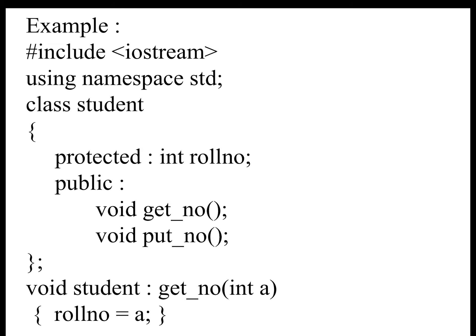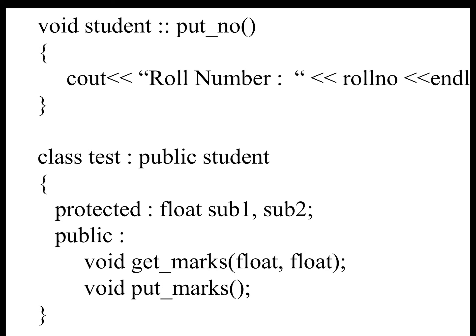Let us look at an example of Hybrid Inheritance. Class Student has a protected member integer roll number, and two member functions: get number and put number. In get number, we read the roll number, and in put number, we display the roll number.